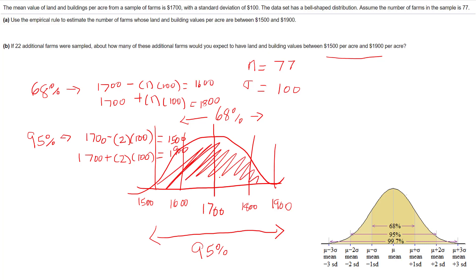So that says 95% of the data is within two standard deviations. It says use the empirical rule to estimate the number of farms. Well, 95% of 77 farms would be about 73 farms.